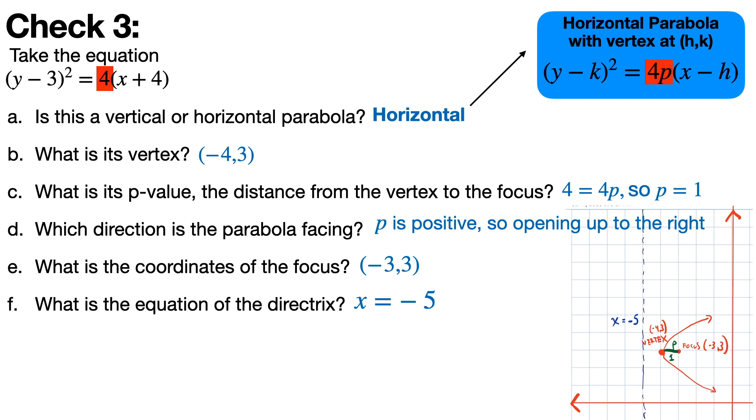So that's how we know that the focus is going to be (-3,3), and the equation of the directrix is going to be x = -5.